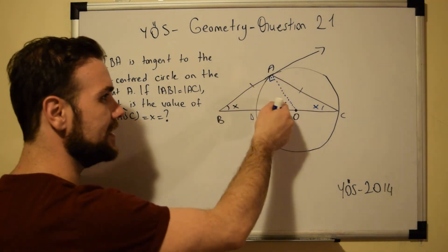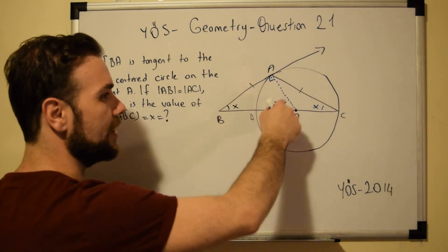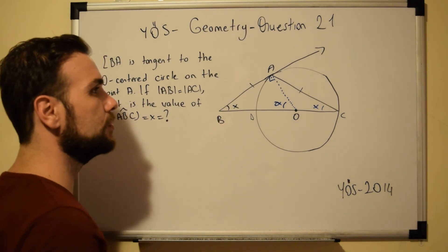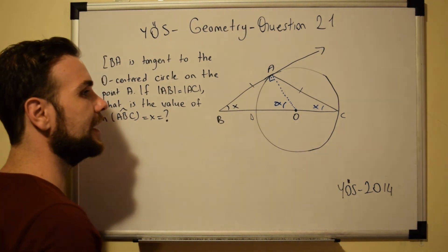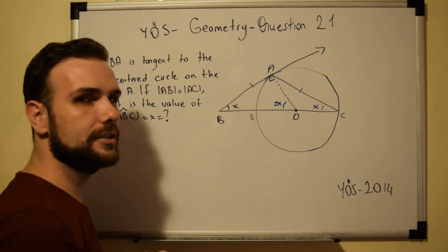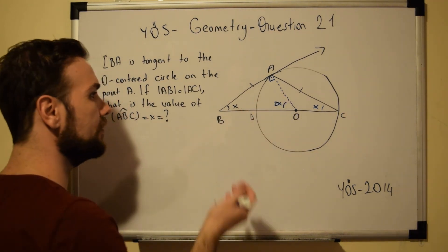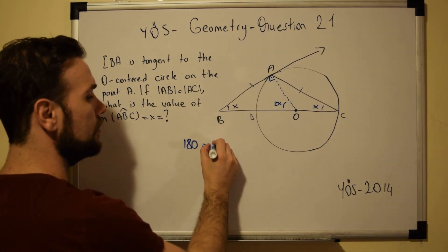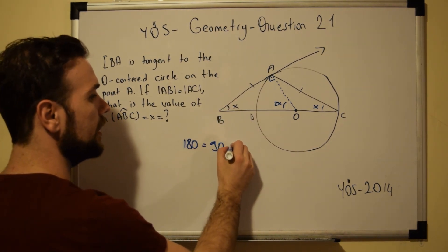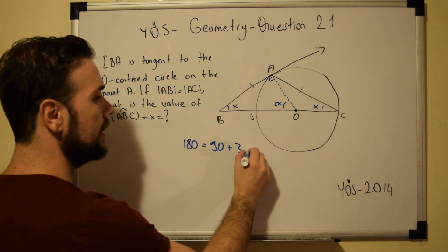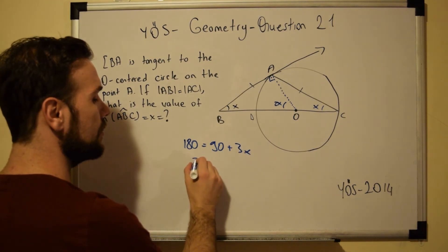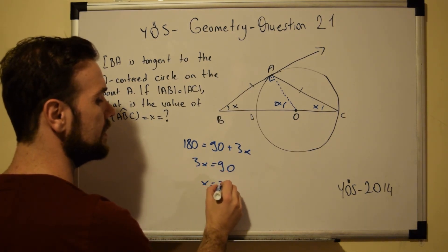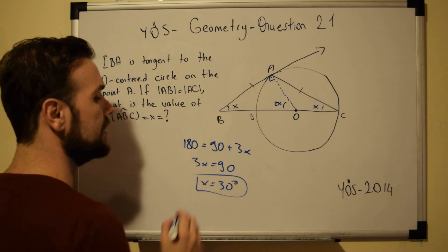Now we are dealing with a triangle, and we know the interior angles of a triangle sum to 180. So we have 180 equals 90 plus X plus 2X, which gives us 3X equal to 90, and therefore the value of X is equal to 30 degrees.